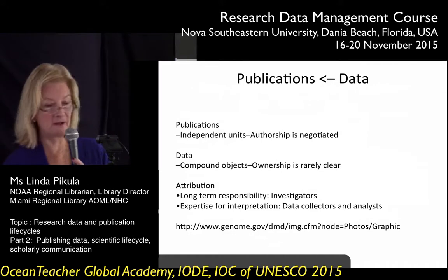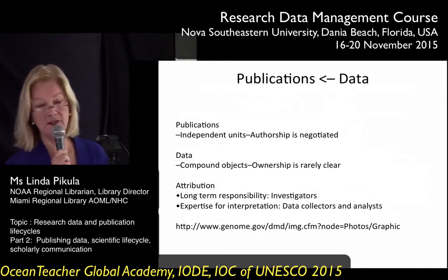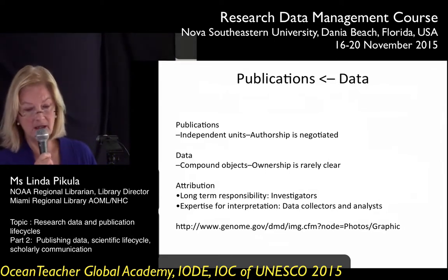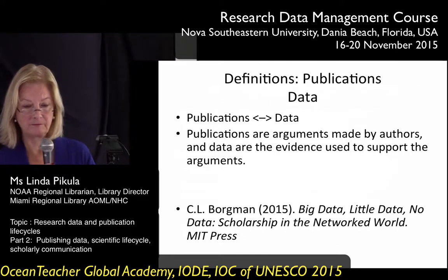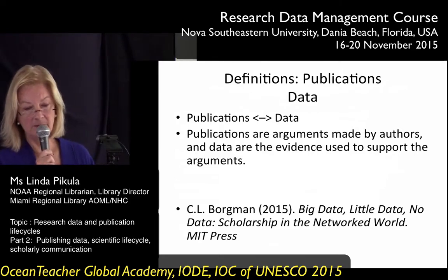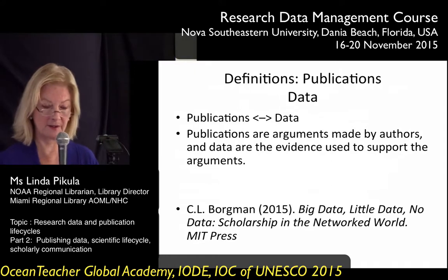Journal articles are a genre that evolved over several centuries as a way to make scholarly arguments, whereas data are the evidence that support those arguments. Efforts to transfer publication practices such as bibliographic citation and altmetrics to data are based on risky assumptions that obscure substantial differences in incentives and infrastructure. Publications are independent units where authorship is negotiated; data can be compound objects where ownership is not clear. Publications are arguments made by authors, and data are the evidence used to support the arguments.